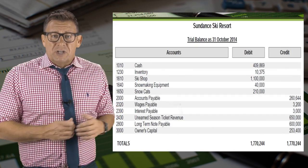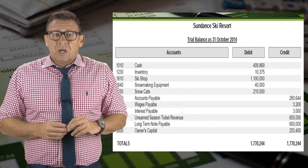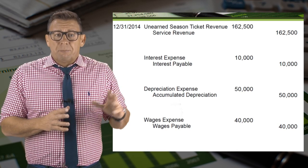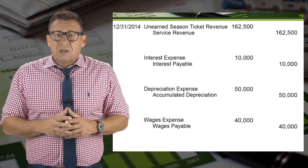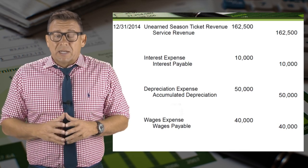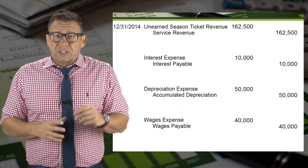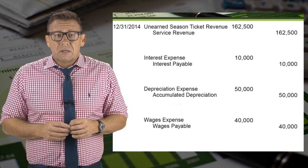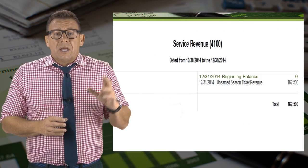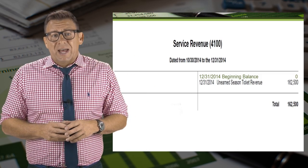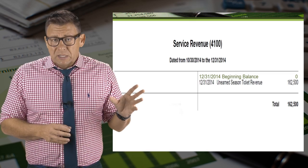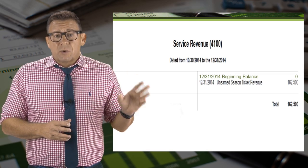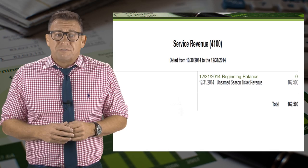Here we have an unadjusted trial balance. We make the adjusting journal entries and post them to the ledger. Then the ending ledger balance after adjustment is used to prepare the adjusted trial balance. In this case, service revenue had a zero beginning balance and after adjustment now has a credit balance of $162,500.